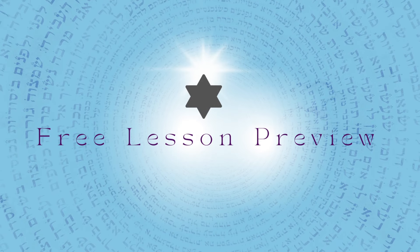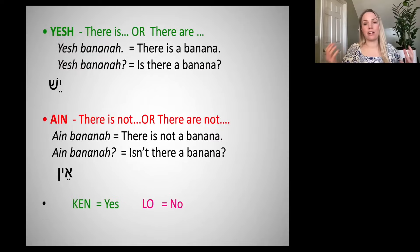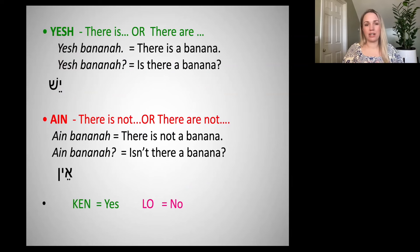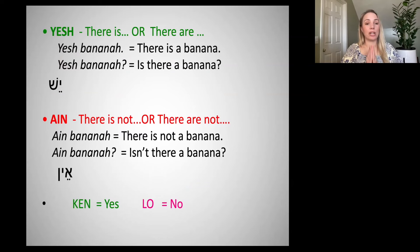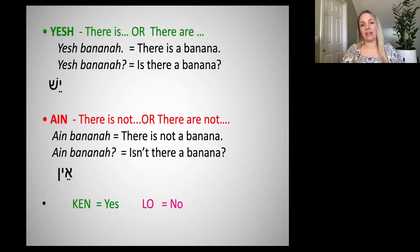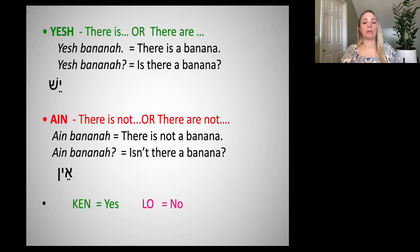In Hebrew, there's a very handy way to say 'there is' or 'there are,' and it's so handy because we don't have to conjugate it or change it based on whether we're talking about something masculine, plural, feminine, or whatever. This little word, 'yesh,' means 'there is' or 'there are.' So if I wanted to say 'there is a banana,' yesh banana, or 'there is a lemon,' yesh limon.